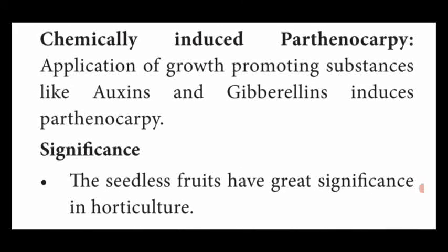Another type is chemically induced parthenocarpy. You already studied growth hormones in 11th standard - five types of hormones. Out of those, auxin and gibberellin are named as growth promoting hormones. These growth hormones induce parthenocarpic fruits. Application of growth hormones such as auxin and gibberellin induces parthenocarpic fruits. This type is called chemically induced parthenocarpy.